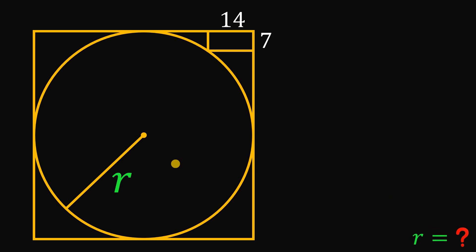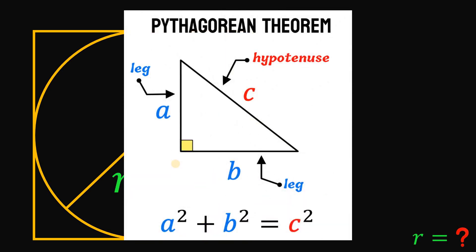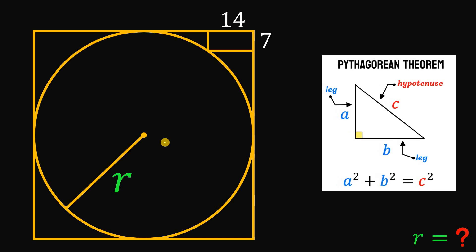To answer this kind of question, we will use the Pythagorean theorem: a squared plus b squared equals c squared. I know what you're thinking — there's no right triangle visible. But using important points like this tangent point, the intersection of the circle and the square, and the intersection of the circle and the rectangle, we can create a right triangle.